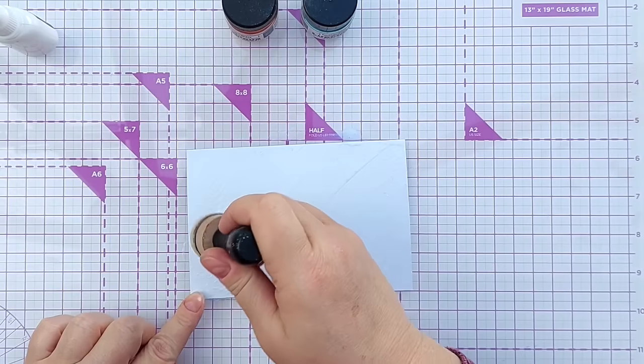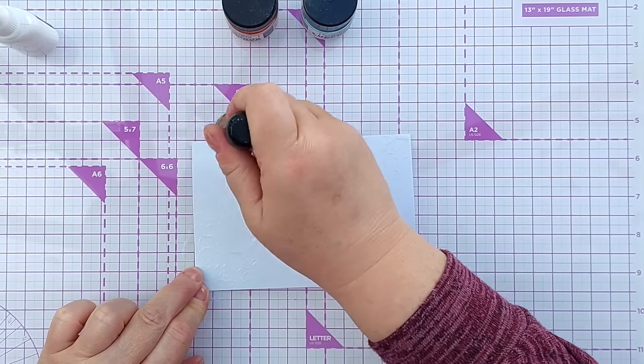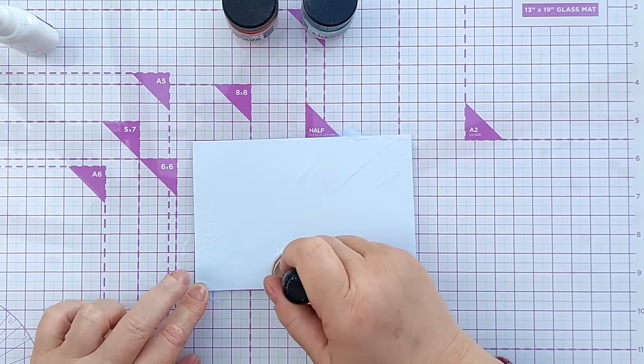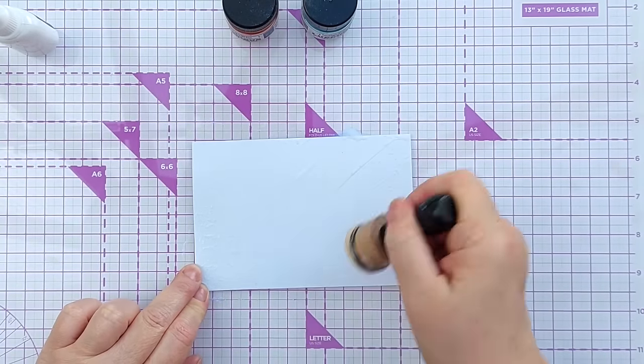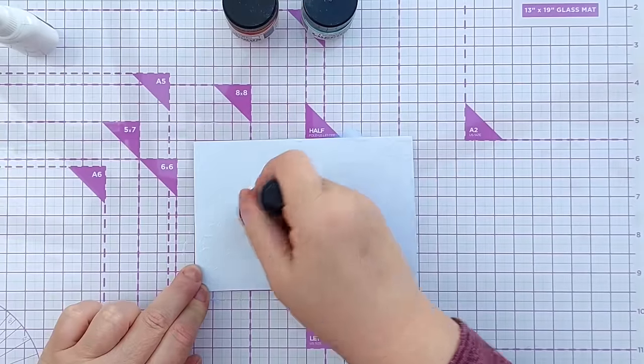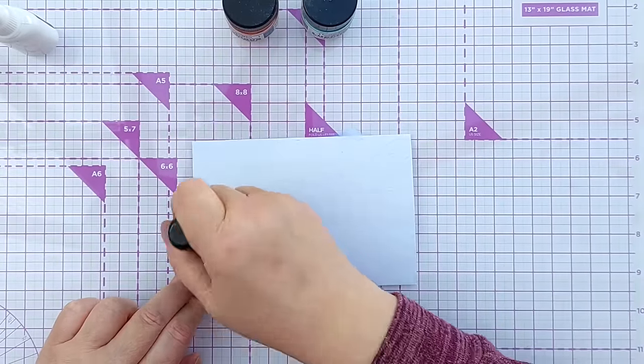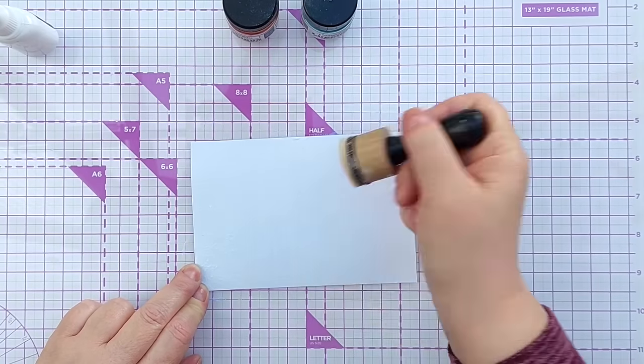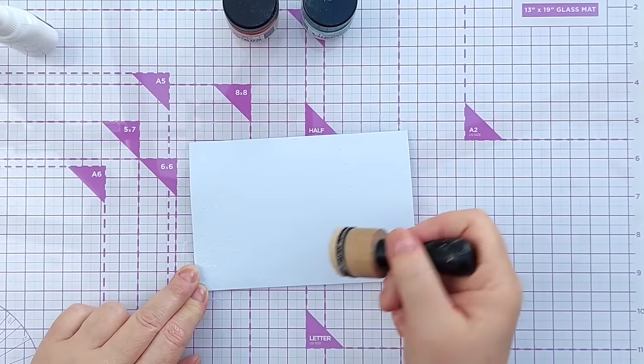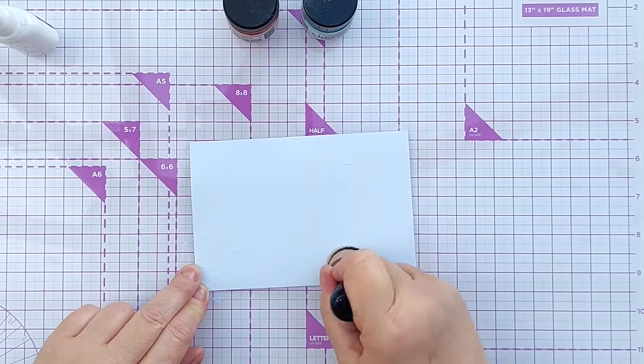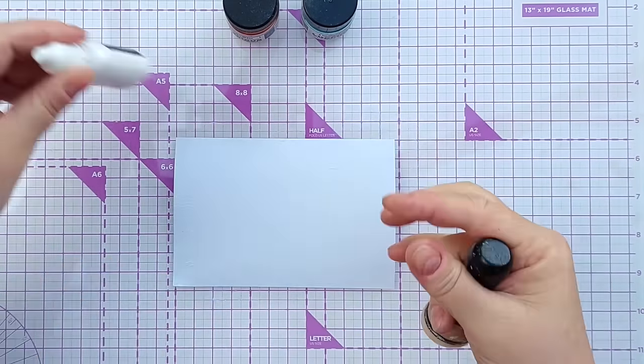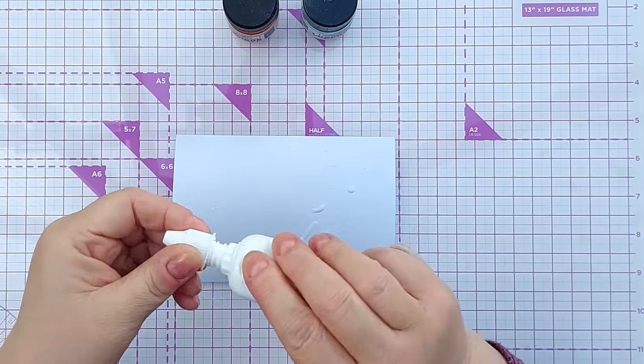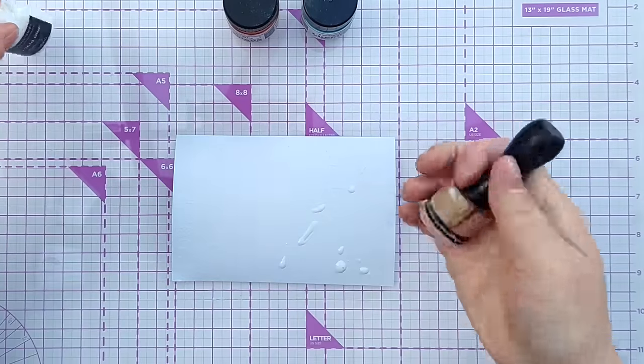And it looks quite streaky at the moment but I'm going to do this pounce up and down to get rid of the streaks but also to create some texture. I guess it's almost marbled. So this glue will dry sticky and once that's happened, which doesn't take very long, you can add your luscious powders to it.